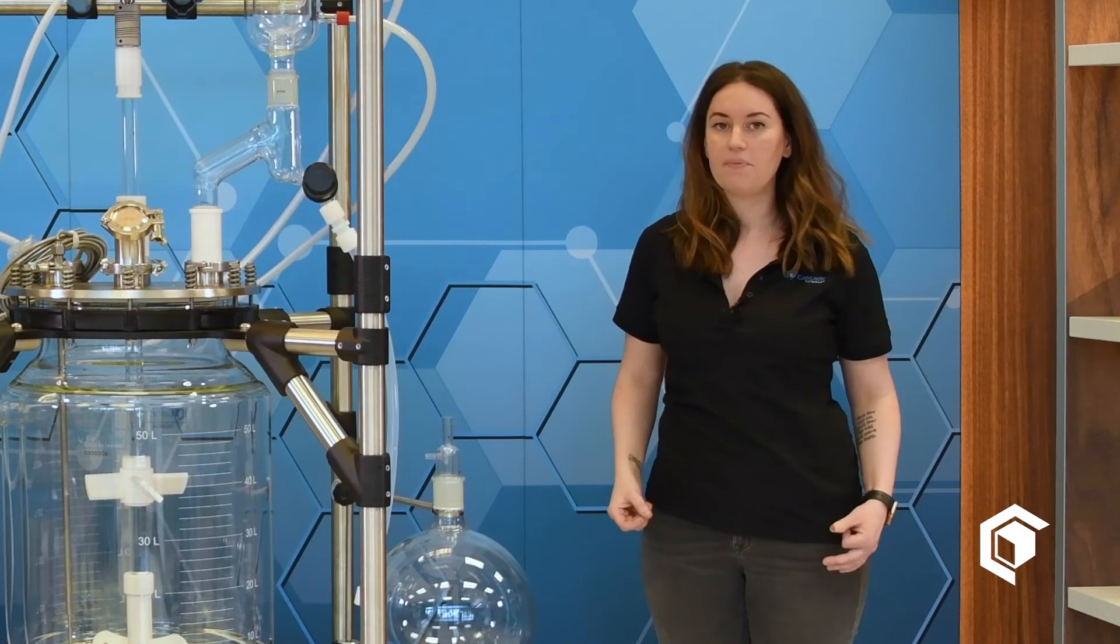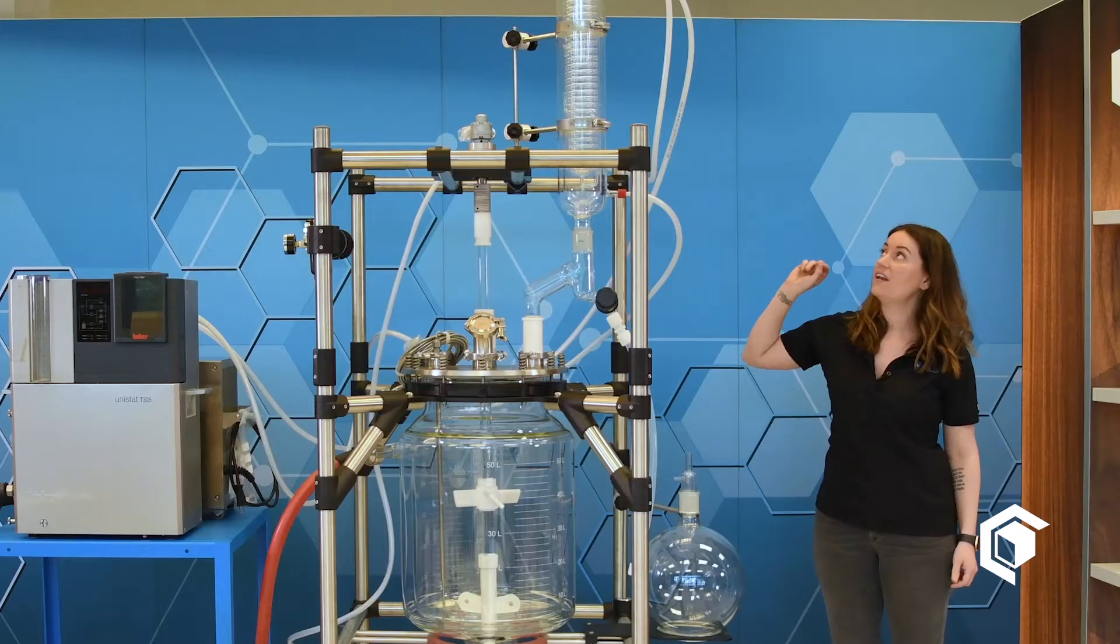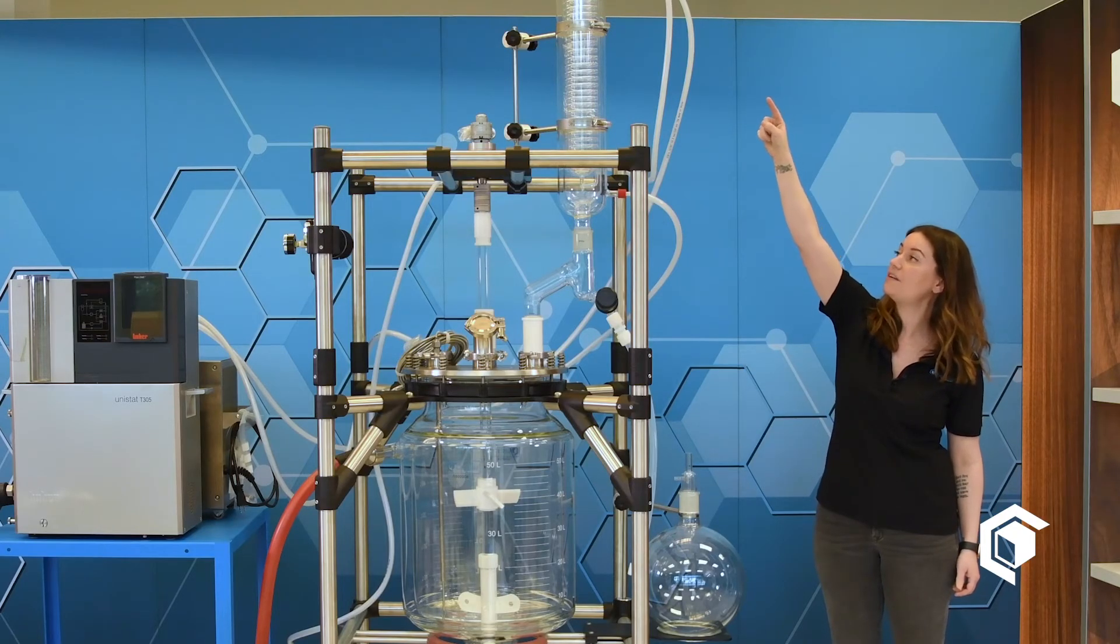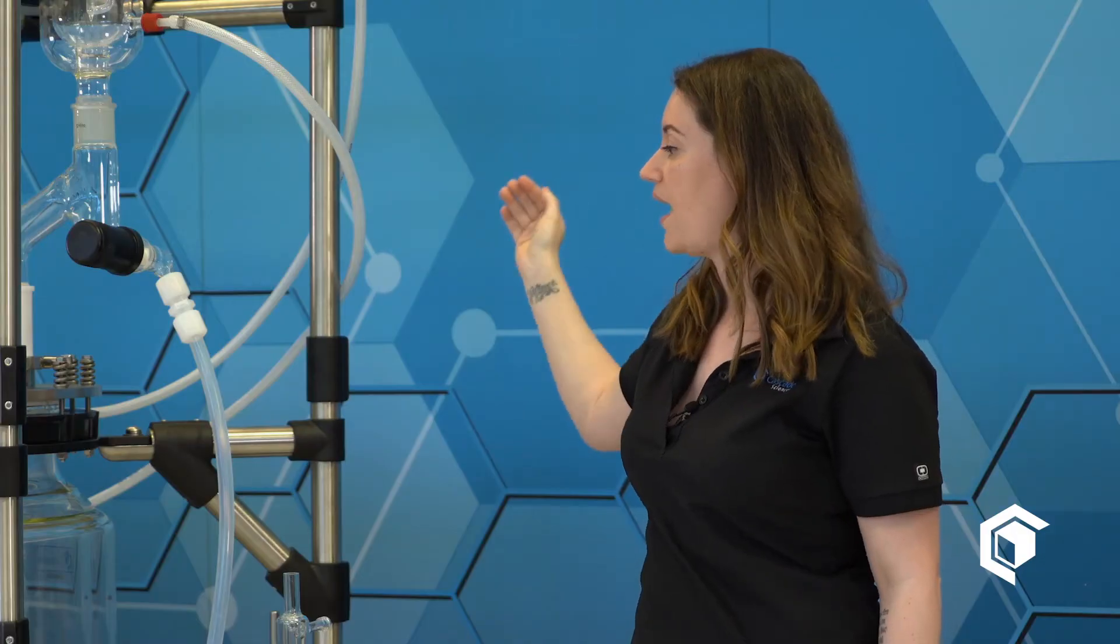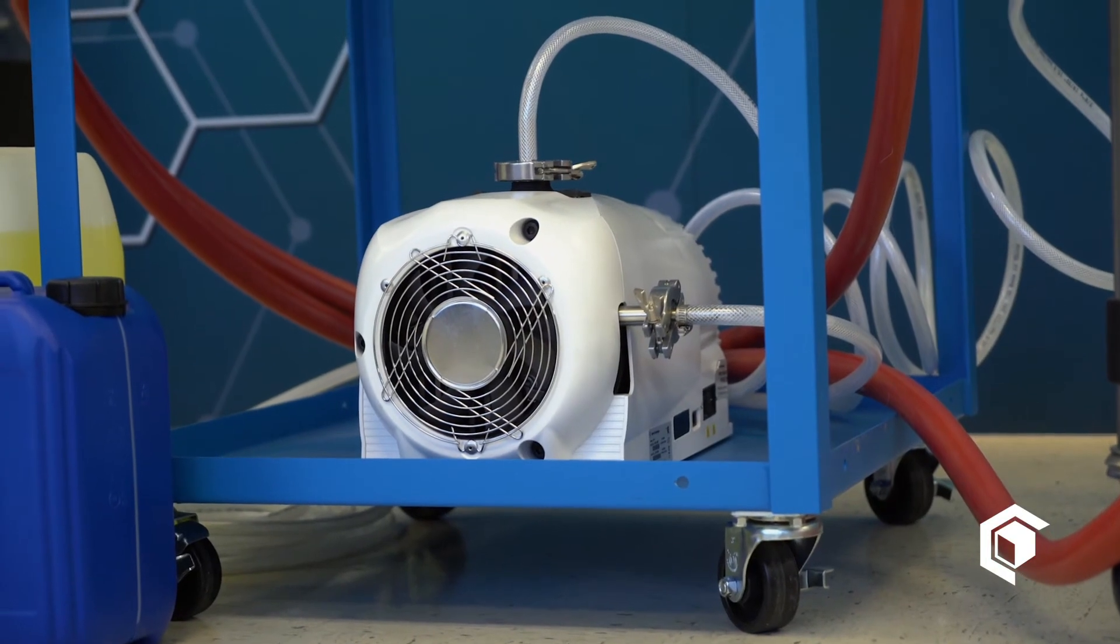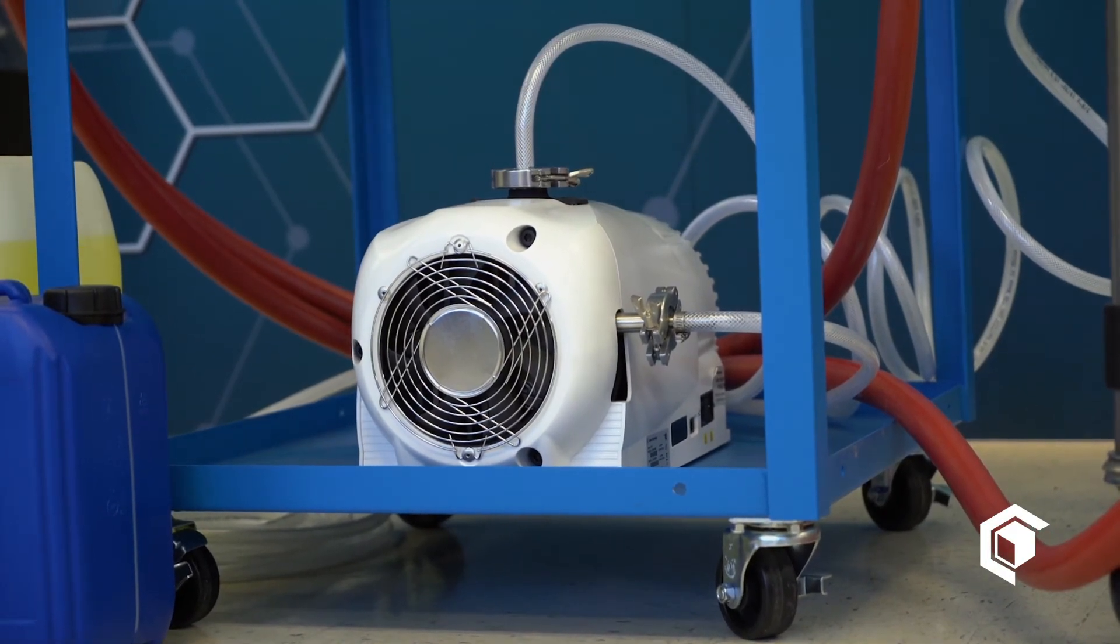So now we're ready to hook up the vacuum pump. You will take your braided vacuum hose and attach it to the top barb on the condenser and wind it back and connect it down onto the inlet valve of the vacuum pump.